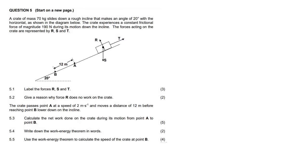In question 5.1, they just want us to label the forces R, S, and T. So R, we know, is the normal force. Let's just see what's happening here. So a crate of mass... okay, so this is actually very interesting. This crate is sliding down the incline, and then it says here the crate experiences a constant frictional force. This will probably be the frictional force. And then S would obviously just be gravity.